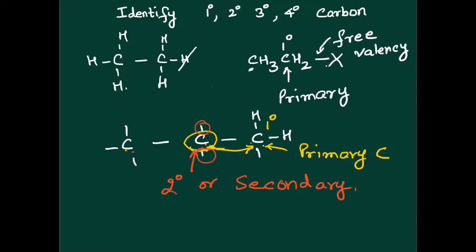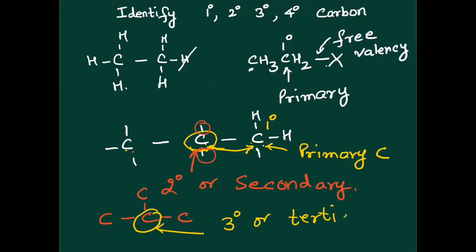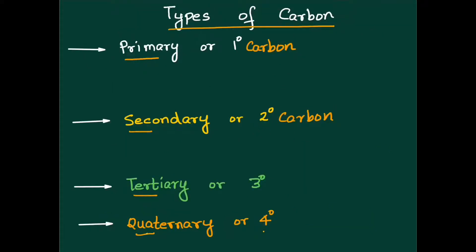What about tertiary? Wherein the carbon is attached to three other carbon atoms — this is called three degree or tertiary carbon atom. There is another term: quaternary or 4 degree carbon atom. A carbon which is attached to 4 other carbon atoms is called 4 degree or quaternary. We cannot have more than that because the maximum covalency of carbon is 4.